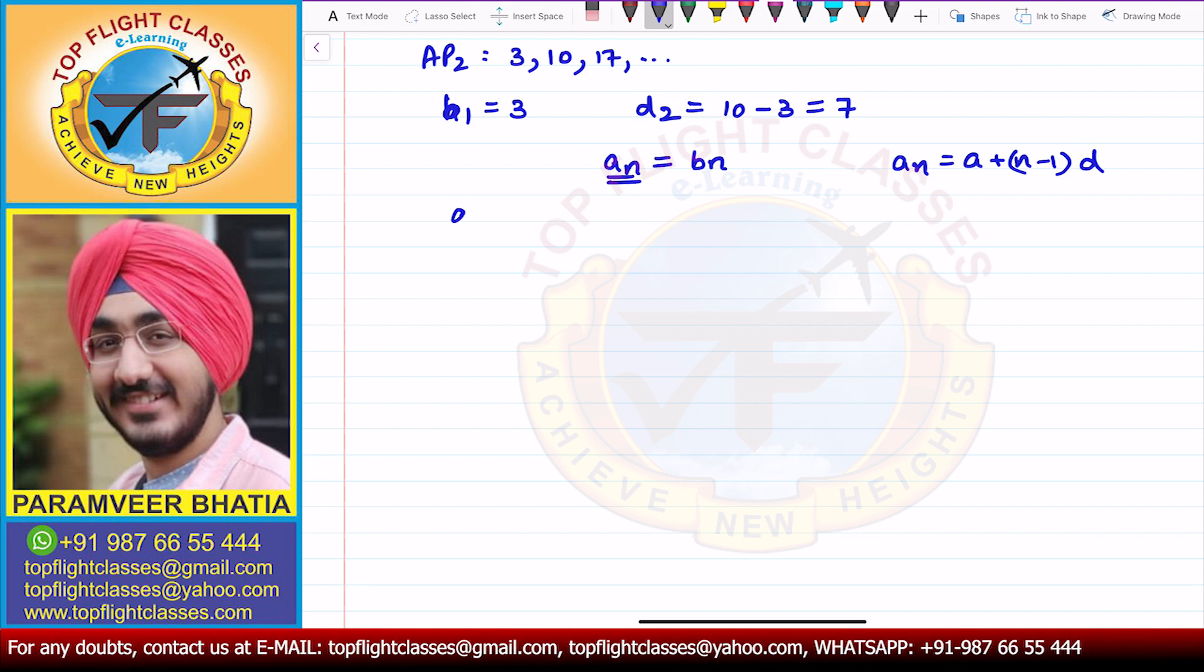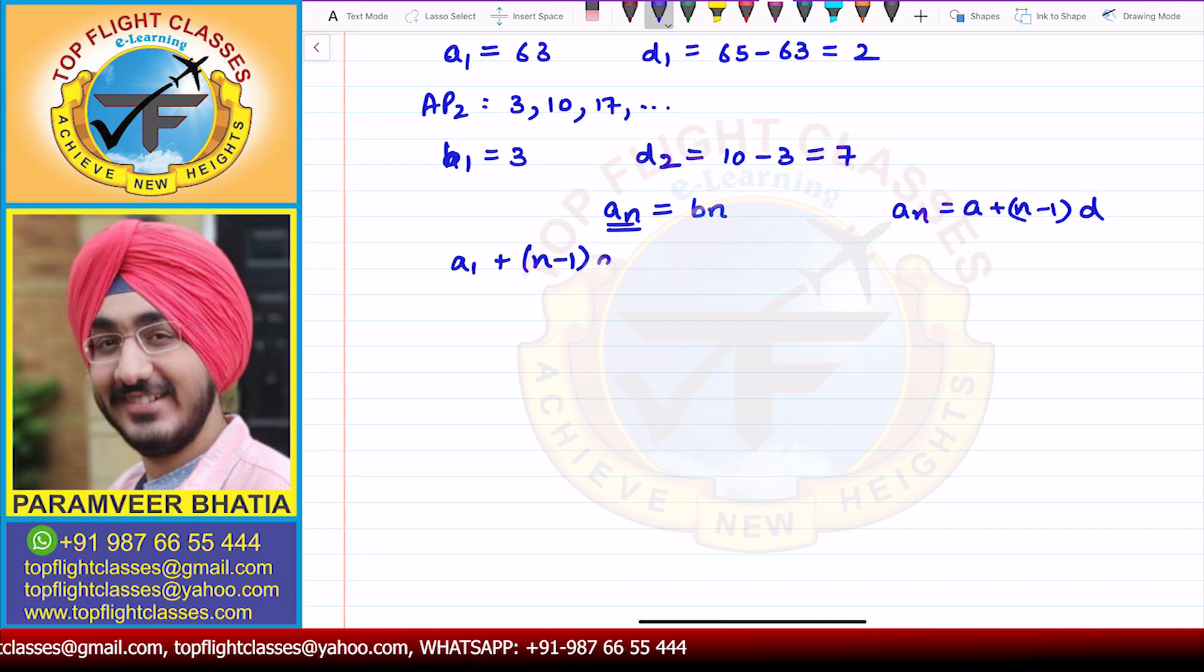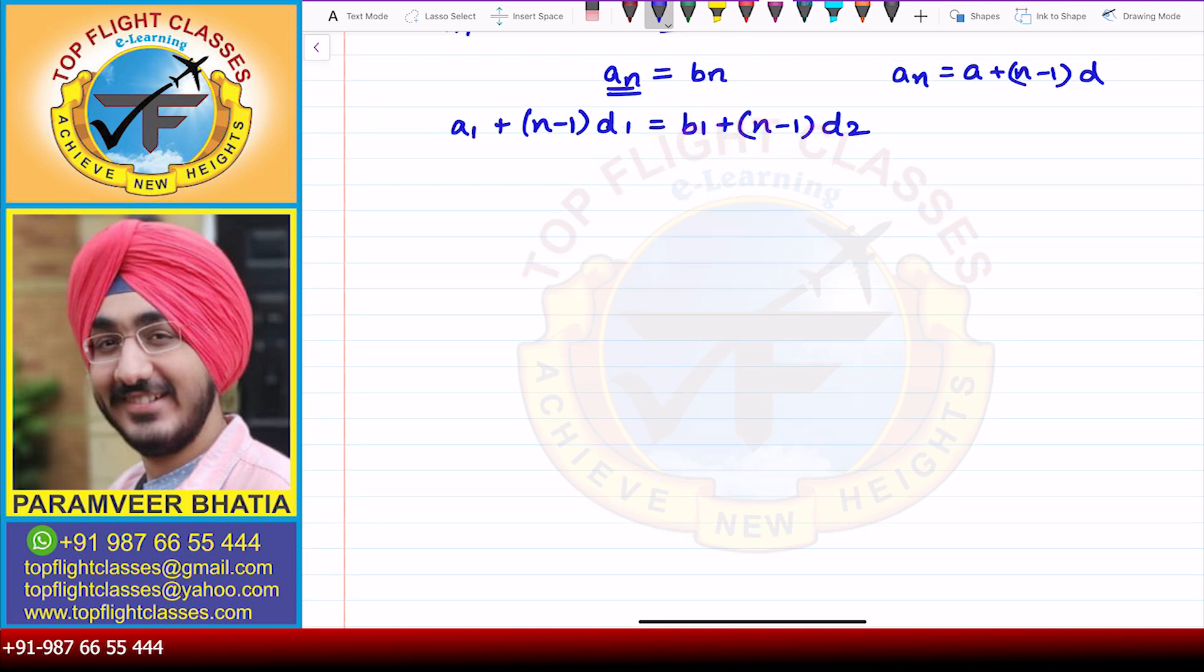the first term is A1 plus n minus 1. So here we will put values. A1 value is 63 plus n minus 1, D1 value is 2, which is equal to B1 value, that is 3, plus n minus 1, because we have nth term, D2 is 7.